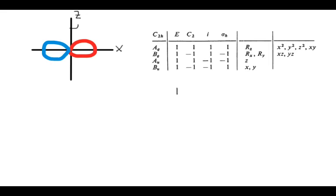If we do a C2, that C2 is going to be around the z-axis, because the z-axis is the principal axis of rotation — we always define z to be the principal axis by convention. If you were to do a C2 around that axis, you would find that the red side ends up on the left and the blue side on the right — it switches the sides of the wave function. So we're going to write down a negative one in the C2 column, showing that the px orbital is not symmetric with respect to C2.